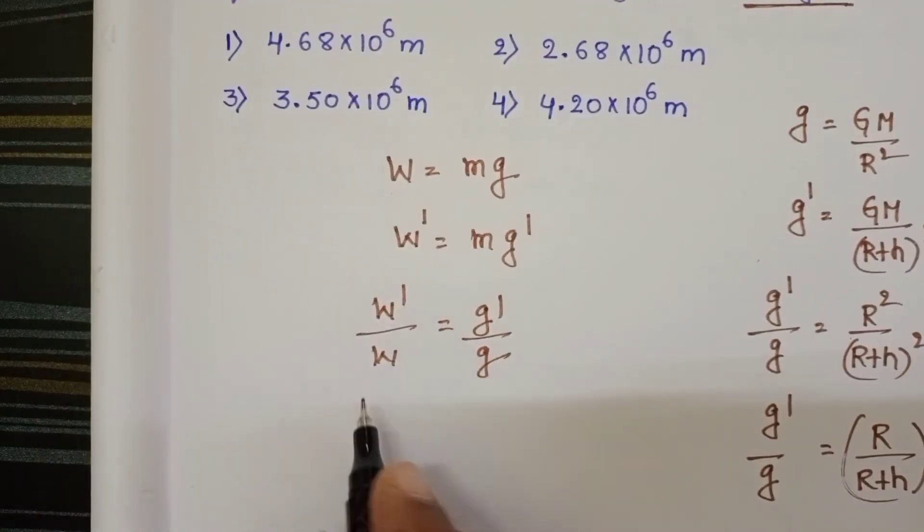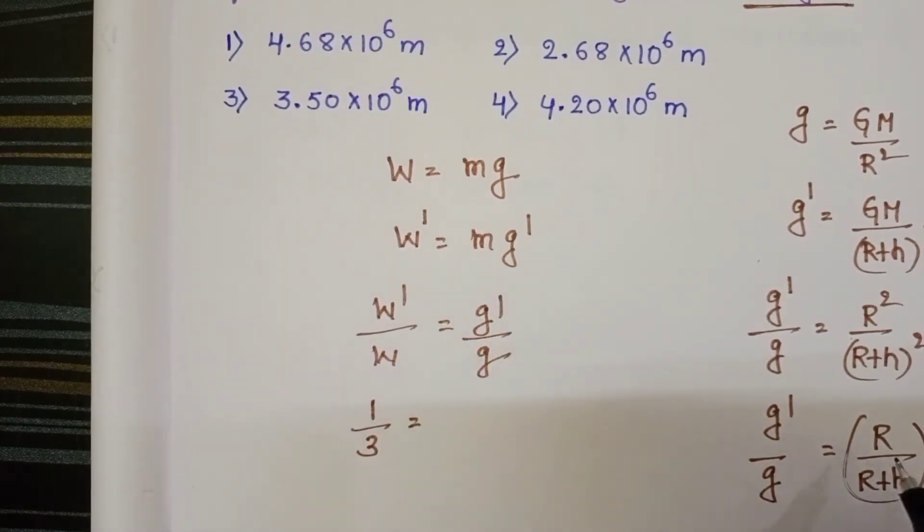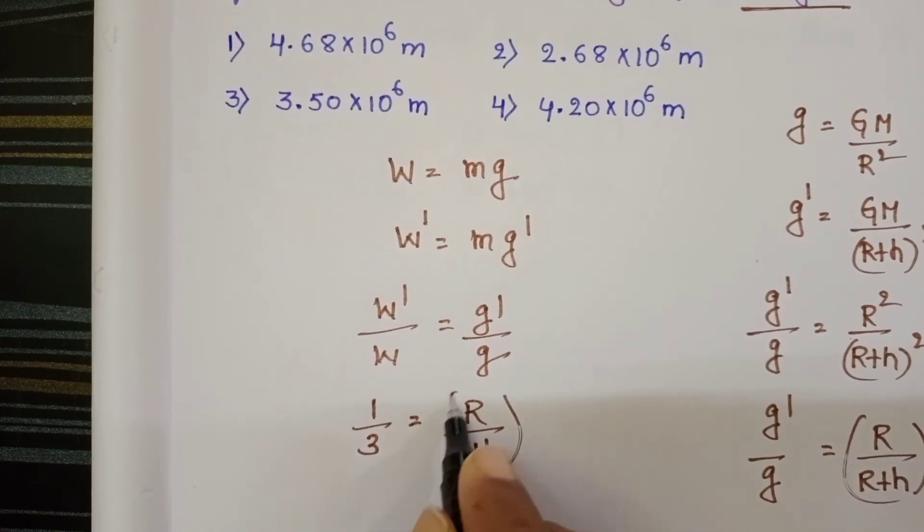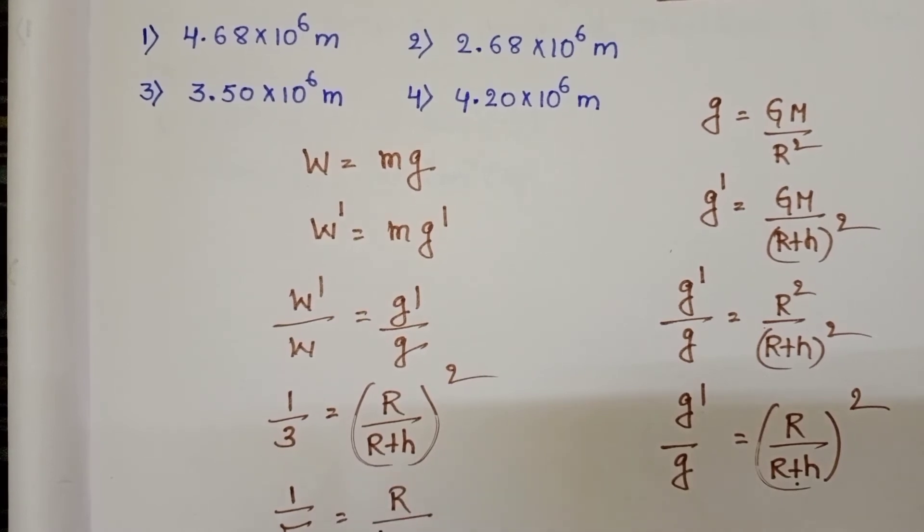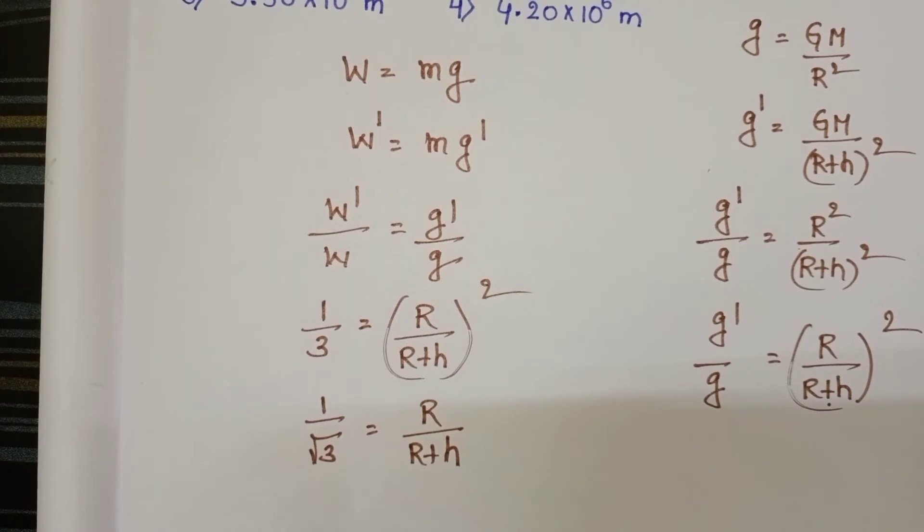And given weight changes to 1 by 3, in place of g dash by g, substitute this: r by (r plus h) whole square. 1 by root 3 equals r by (r plus h). Simplify this and find out height.